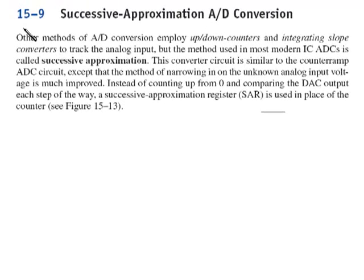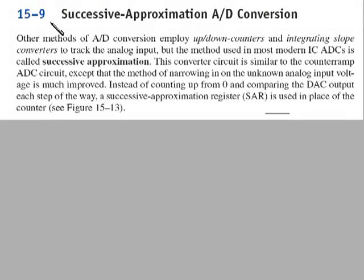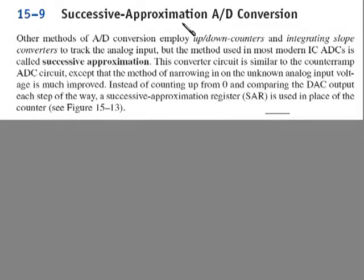Hi, this is Professor Kleitz. In section 15-9, I'm going to talk about successive approximation analog to digital conversion. Other methods of A to D conversion employ up-down counters, integrating slope converters to track the analog input, but the method used in most modern ICs is called successive approximation.